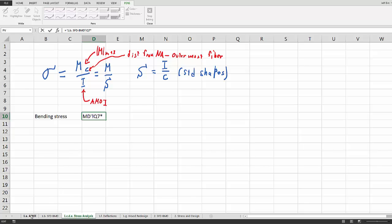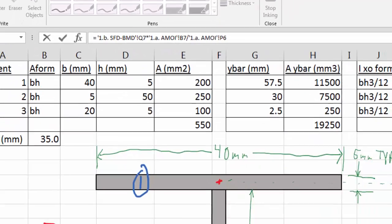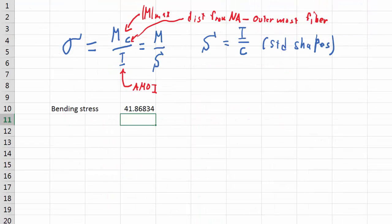and then multiply by C, so we go over here to this value here, and C is our y-bar, and then we're going to divide by I, which is this. Now we have to make sure we get the units right, so bending stress is going to be 41.9.